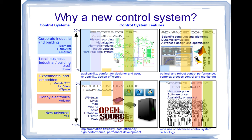On this side we have the main control system features. The most important is process control requirements — how the control system satisfies history recording, visualization, alarms, schedules, inputs, outputs, and hard real-time system. We also look at how the system supports advanced control: scientific computational platforms, dynamic simulators, and advanced techniques.